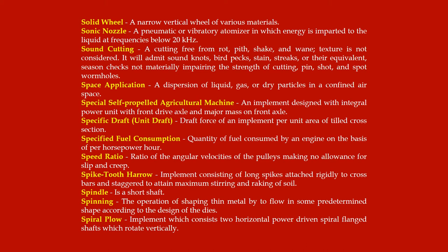Specified fuel consumption: quantity of fuel consumed by an engine on the basis of per horsepower-hour. Speed ratio: ratio of the angular velocities of the pulleys making no allowance for slip and creep. Spike tooth harrow: implement consisting of long spikes attached rigidly to crossbars and staggered to attain maximum stirring and raking of soil.